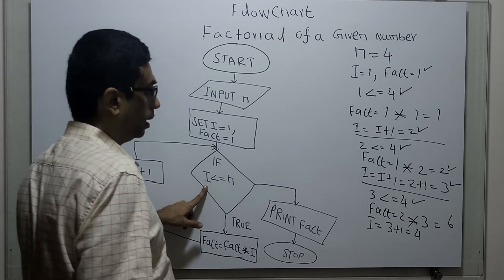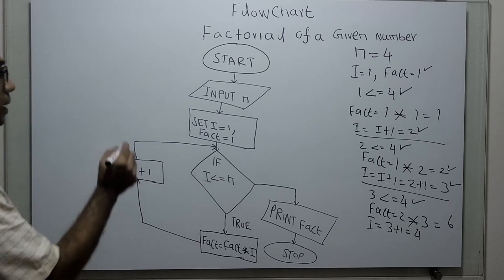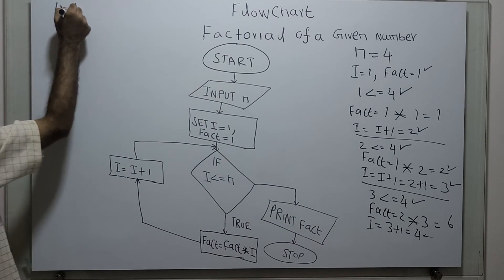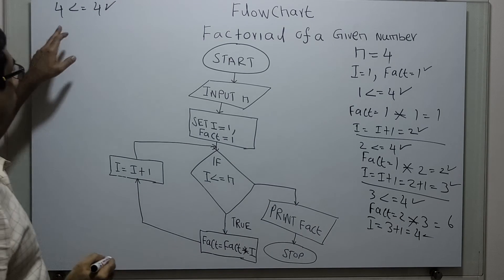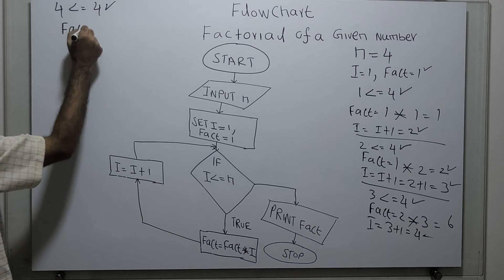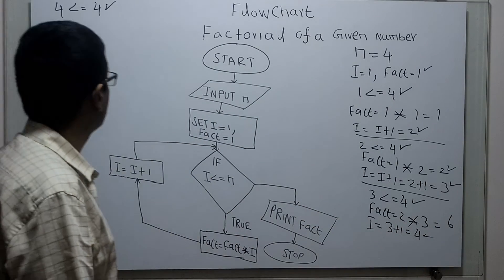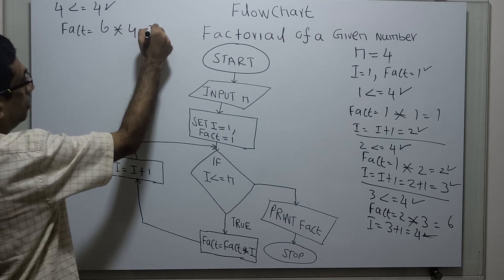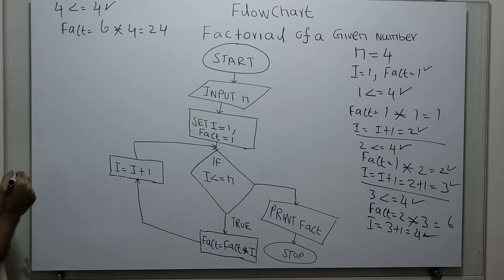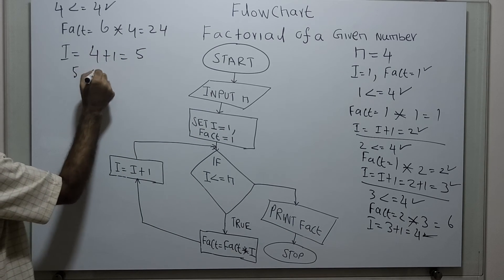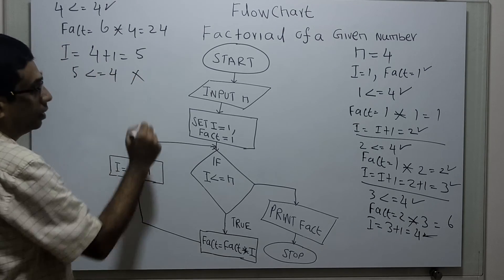Now I am checking i less than or equal to n. i value is 4 — 4 less than or equal to 4 is true. Fact equal to fact multiplied by i. Existing value of fact is 6, multiplied with i value which is 4, equals 24. Now I am incrementing i by 1 — existing value of i is 4 plus 1, which equals 5. Now 5 less than or equal to 4, with n value 4, is false — this is a false statement.